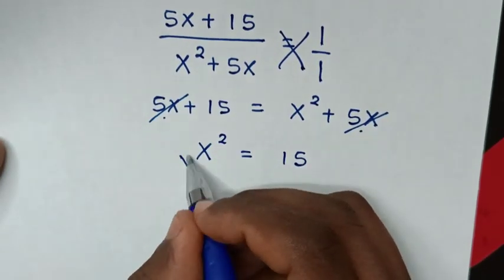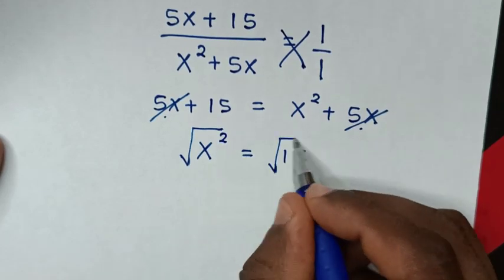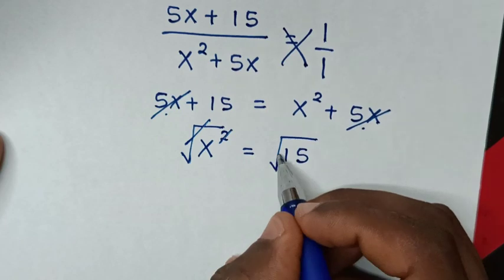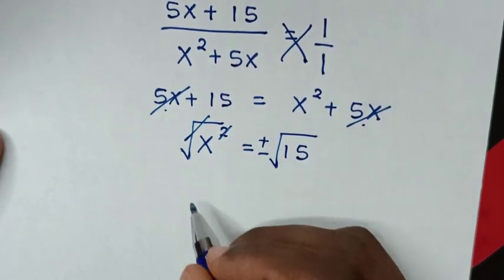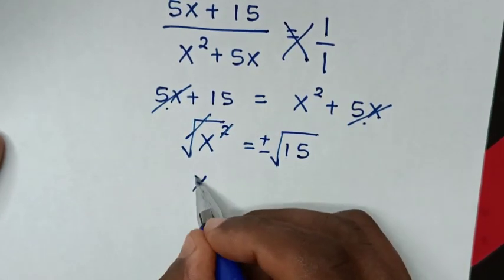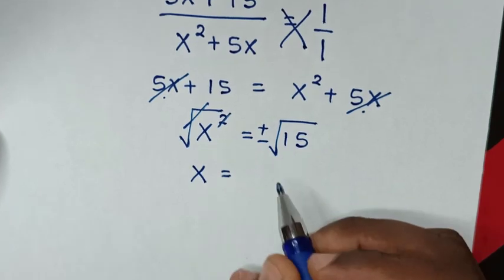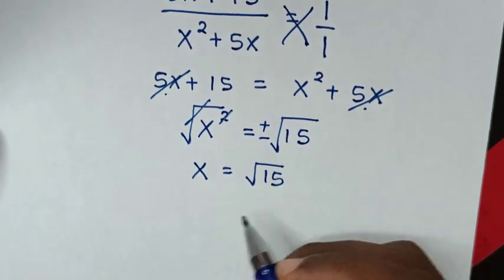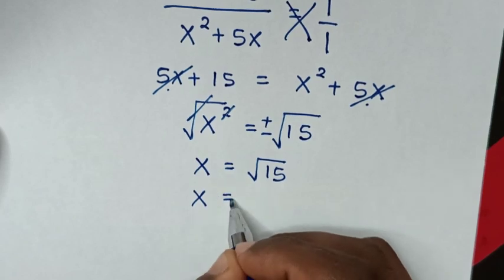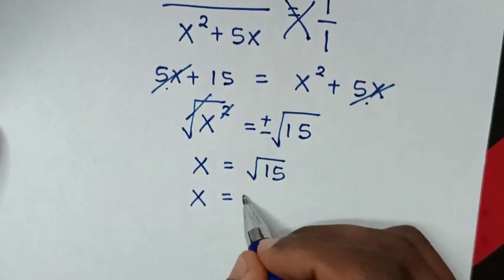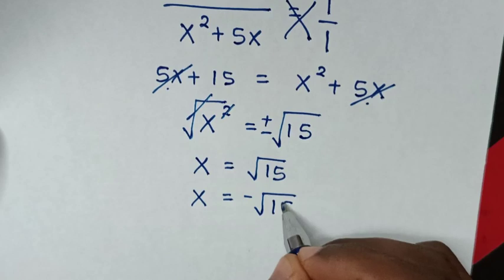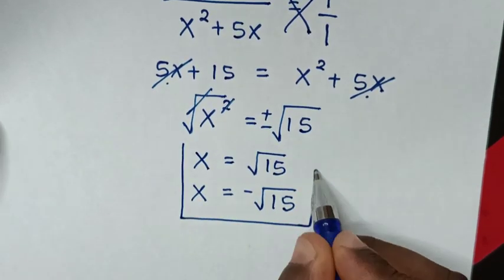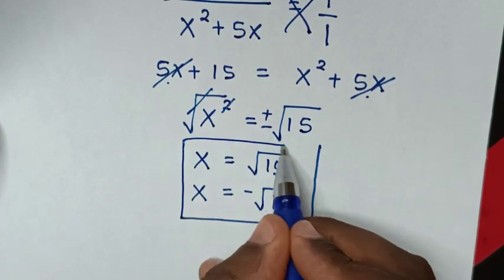Then we'll apply square root on both sides. So the square root will cancel the square. And the result is plus or minus. So x is equal to positive square root of 15, and the other value of x is equal to negative square root of 15. Therefore these are all the values of x in this problem.